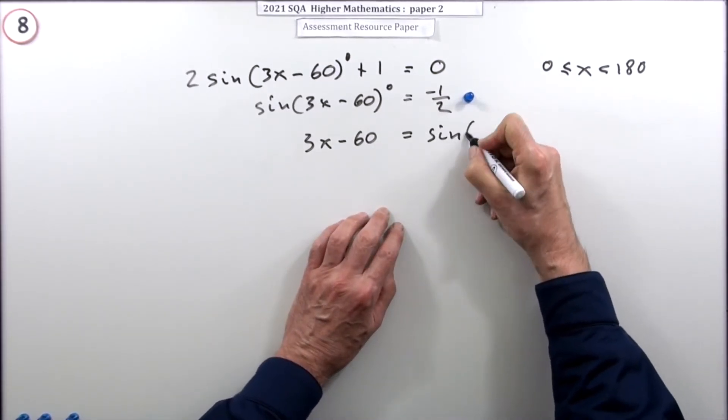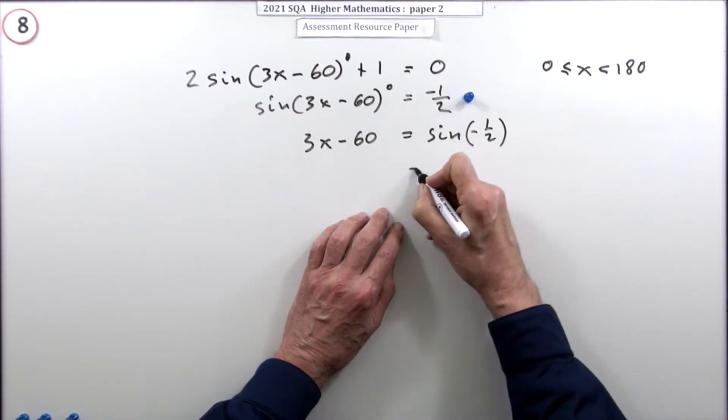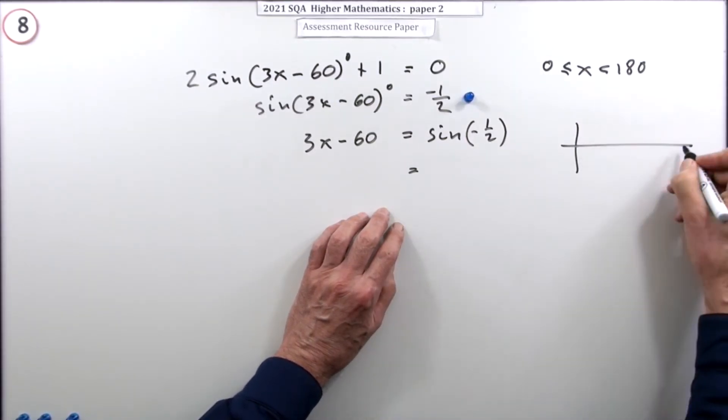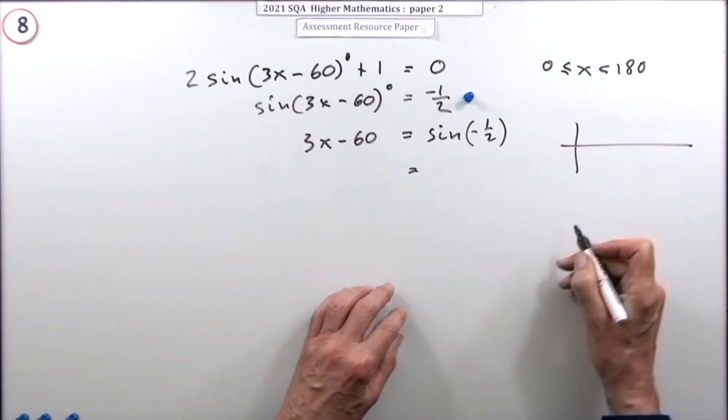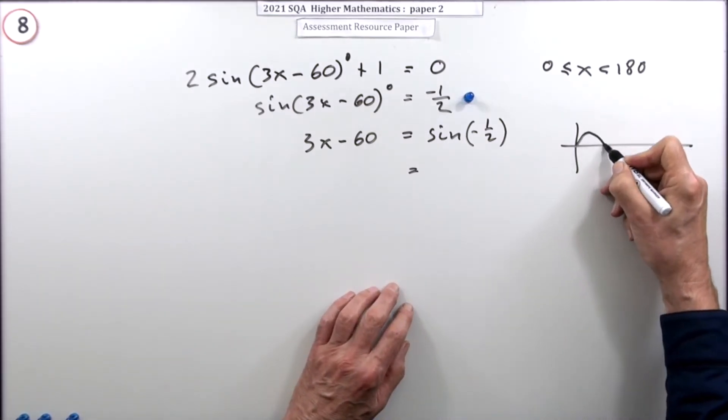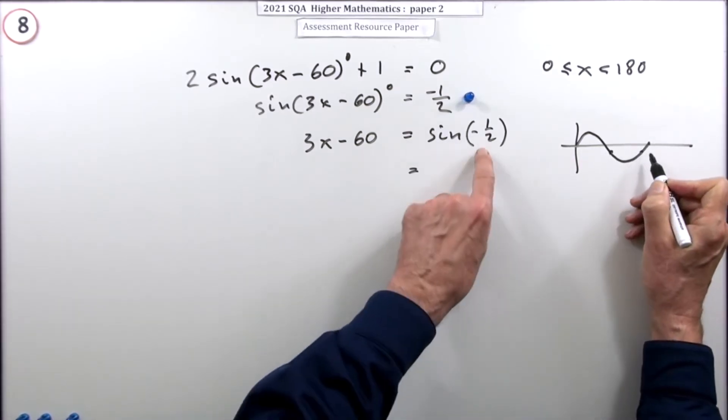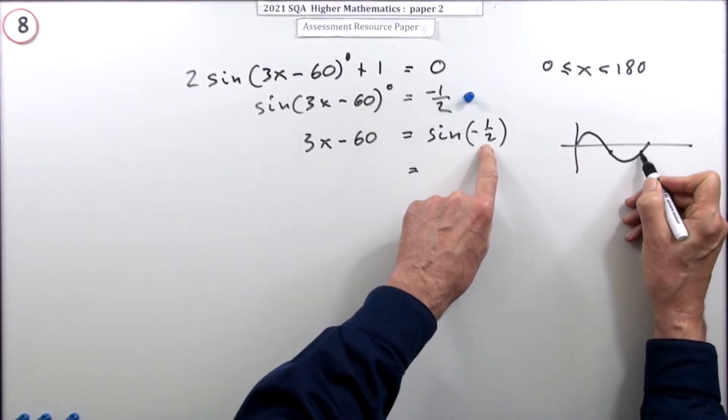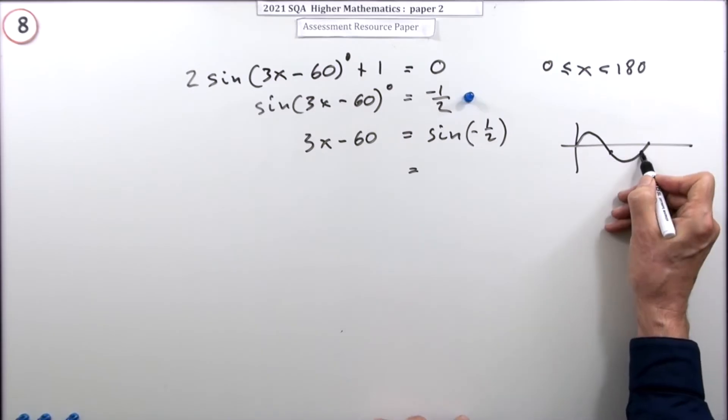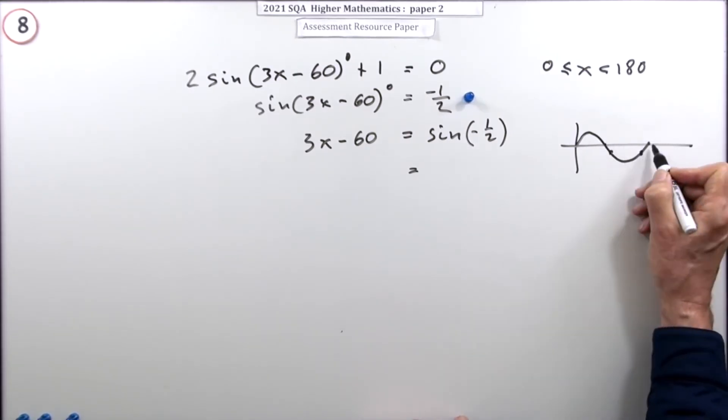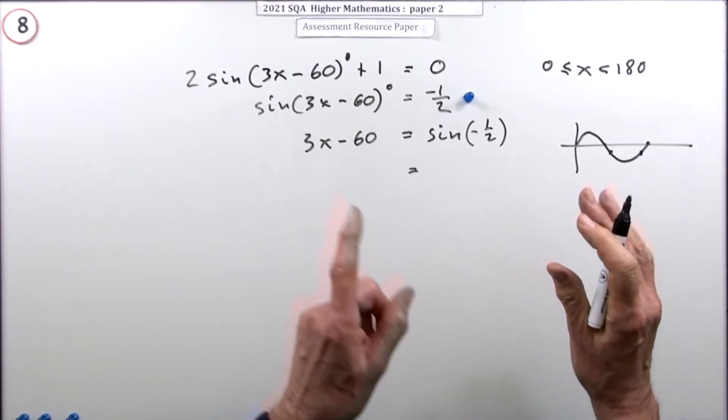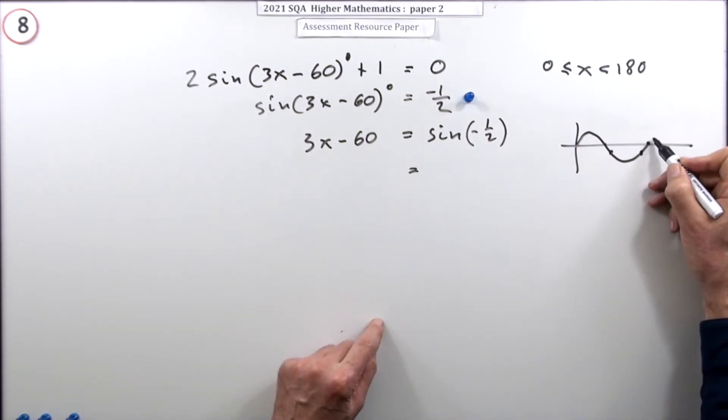Inverse sine of negative a half - what are they? You could put down a table, use a calculator to get a few of them, or just draw the graph of sine. You know that value there, that's 30 degrees, but for it to be negative it would have to be here, 30 more and 30 less. This is where you have to be careful.